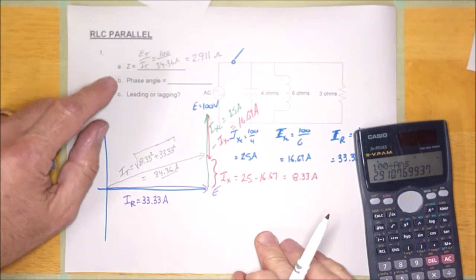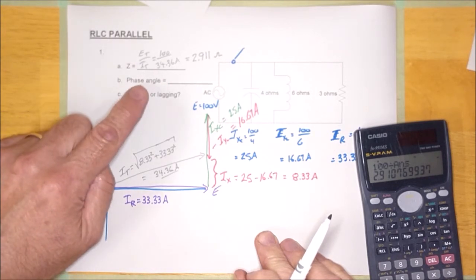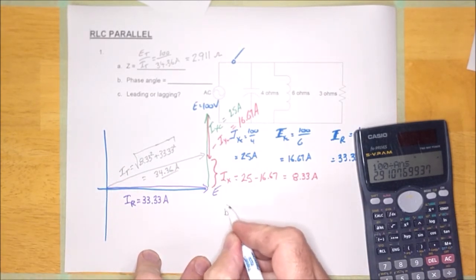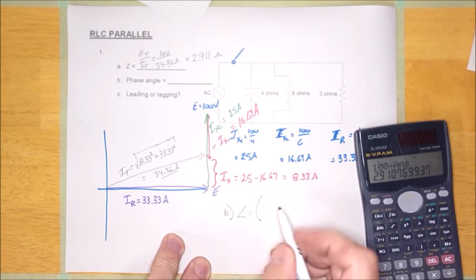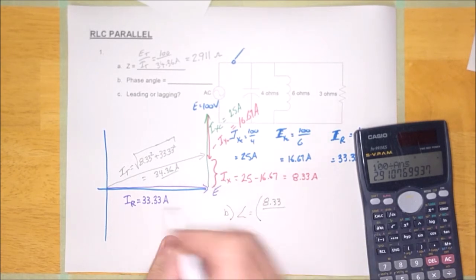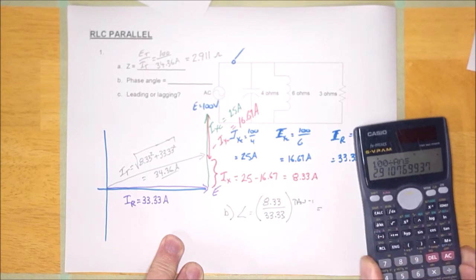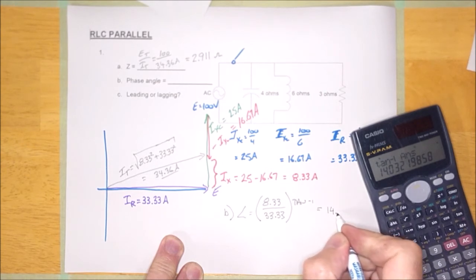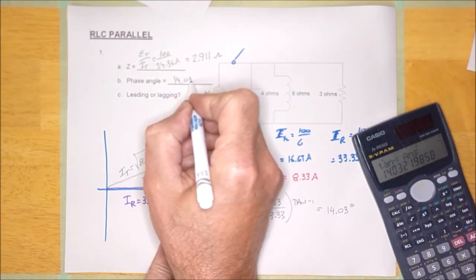Now, we've got two more things to calculate here, guys. One is the phase angle, and one is whether this circuit is leading or lagging. Now, the phase angle, I can see it right there. And I'm going to calculate it my favorite way. We'll do it right over here. The angle is going to be the opposite over the adjacent inverse tan. Here's the opposite side, guys. 8.33. Here's the adjacent. 33.33. Shift 10. 8.33 divided by 33.33 equals shift 10 equals. Looks like the angle on this guy is 14.03 degrees. So we'll put that right here. 14.03 degrees.